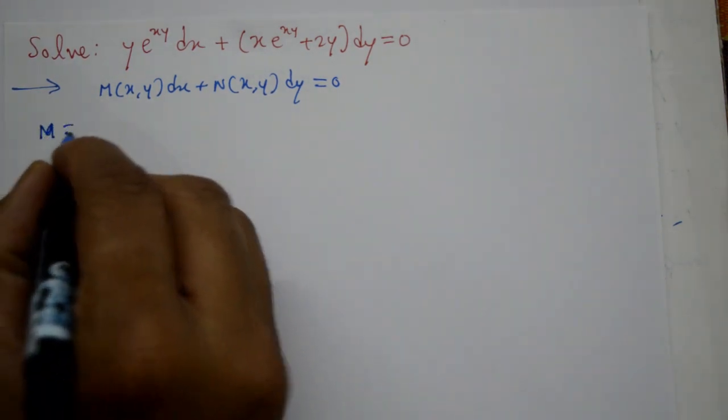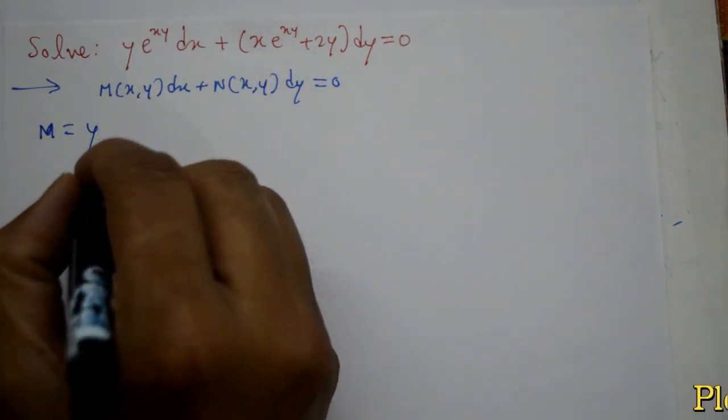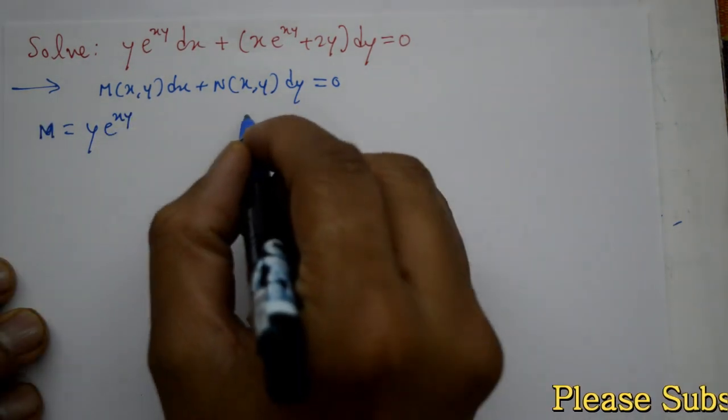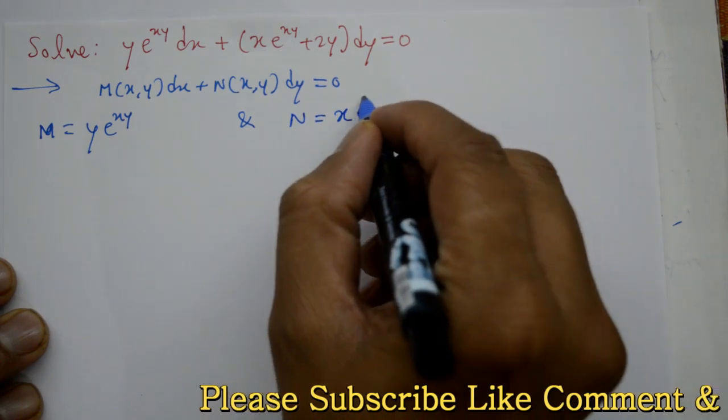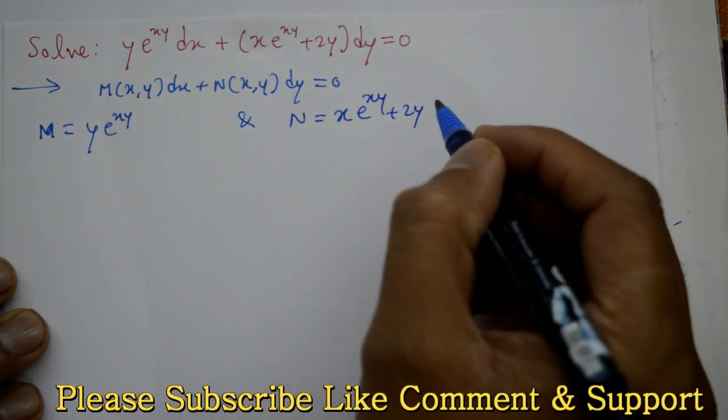Either m is equal to, m is the part, y into e raise to xy. And either n is equal to the part, that is n is equal to x into e to the power xy plus 2y.